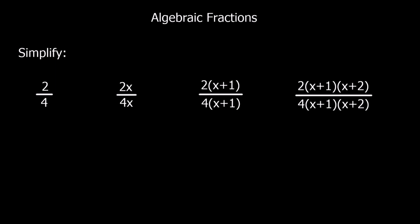We can simplify algebraic fractions, or any kind of fractions, as long as we do the same to the top and the bottom. So if we look at this first one over here, 2 over 4, what we can do is divide top and bottom by 2. So if we divide the top by 2 we get 1, and we divide the bottom by 2 we get 2. So 2 over 4 is the same as 1 over 2.